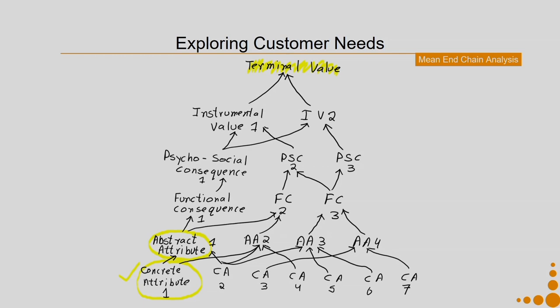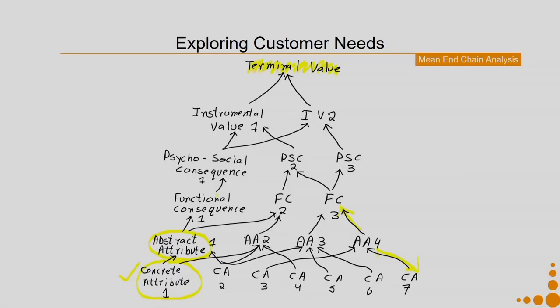Once it is done, go back to your stakeholders and make modifications accordingly. From abstract attributes we go into identifying the concrete attributes. From abstract attributes we then identify functional consequences, then the psychosocial consequences, and as a result the instrumental value and terminal value created.